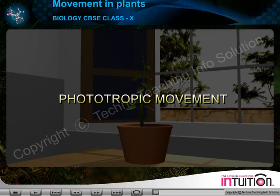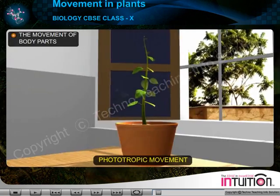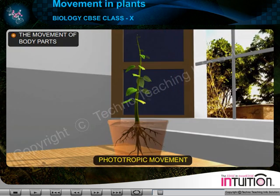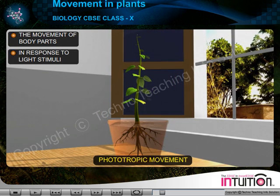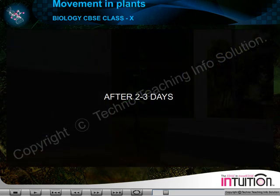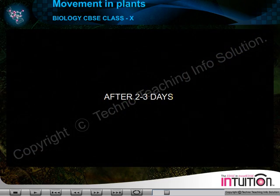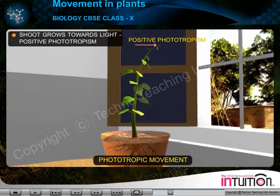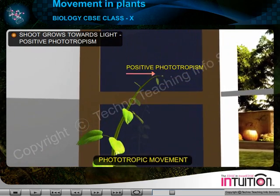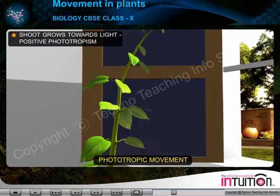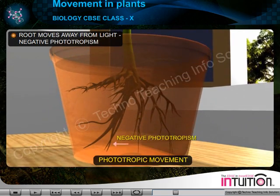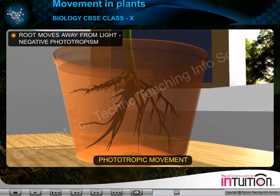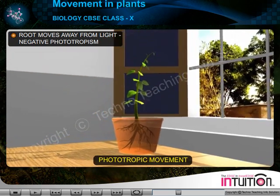Phototropic movement. The movement of body parts of plants in response to light stimuli is known as phototropic movement. A shoot that grows towards the source of light is called positive phototropism, while a root that moves away from the source of light is called negative phototropism.